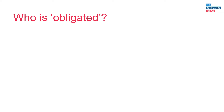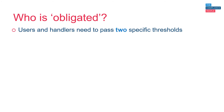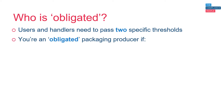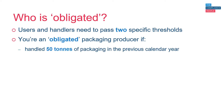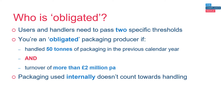So who is obligated by the regulations? All businesses that use and/or handle packaging or packaging materials will be obligated if they pass two specific thresholds. You are an obligated packaging producer if you, or the group of companies you are part of, handled 50 tonnes or more of packaging materials or packaging in the previous calendar year, and also have a turnover of more than £2 million a year. You are not obligated if you are only handling packaging or packaging materials that you use internally within your business.